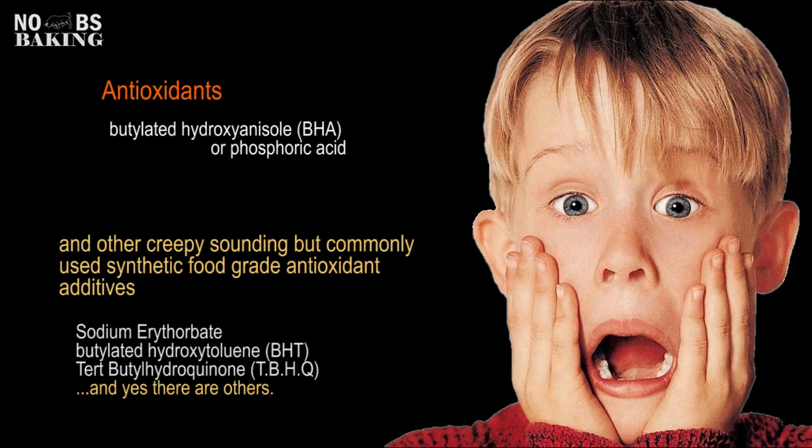BHA can also be found still being used in meats, cereals, chewing gum, various baked goods, snack foods, and even beer in some parts of the world. Although most chemical preservatives are now considered to be without potential adverse effects, BHA and BHT are seemingly being phased out due to emerging health and safety concerns.